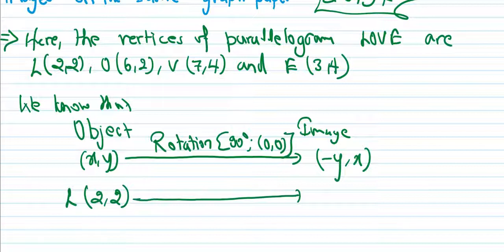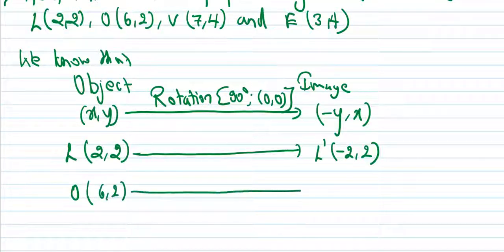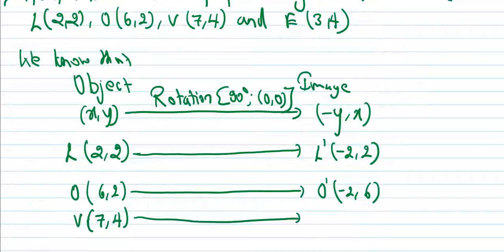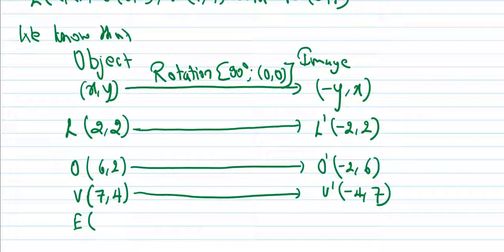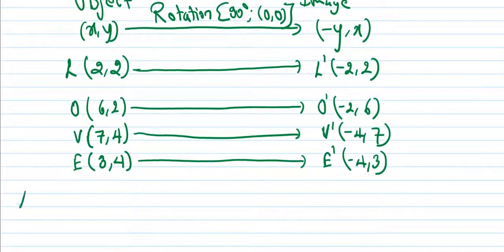After rotation about positive 90 degree about origin: L dash becomes minus 2 comma 2. Then O has coordinate (6, 2), so O dash equals minus 2 comma 6. Then V has coordinate (7, 4), so V dash becomes minus 4 comma 7. Then E has coordinate (3, 4), so after rotation about positive 90 degree about origin, E dash becomes minus 4 comma 3.